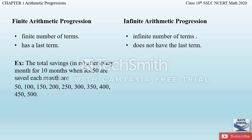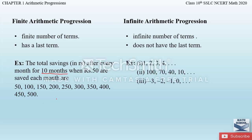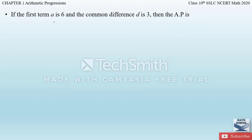For example of a finite AP: the total savings after every month for 10 months when 50 rupees are saved each month — the savings are 50, 100, 150, 200, up to 500. Since the duration of 10 months is specified, this is a finite AP. In an infinite AP, the last term is not specified. Examples for both finite and infinite APs are mentioned on page 4, Chapter 1 of your textbook.